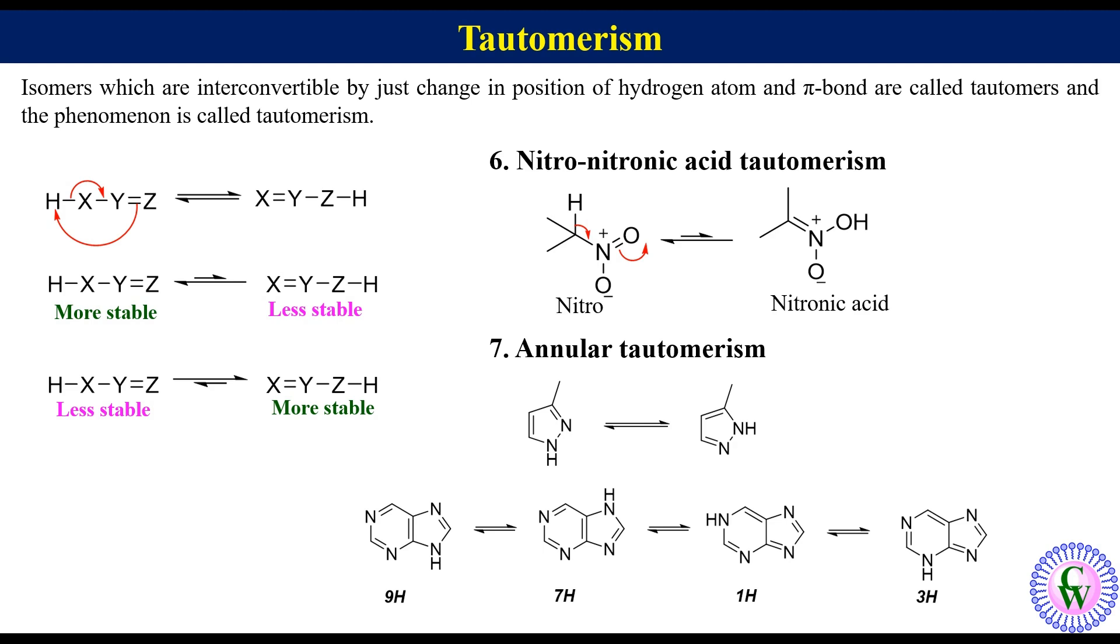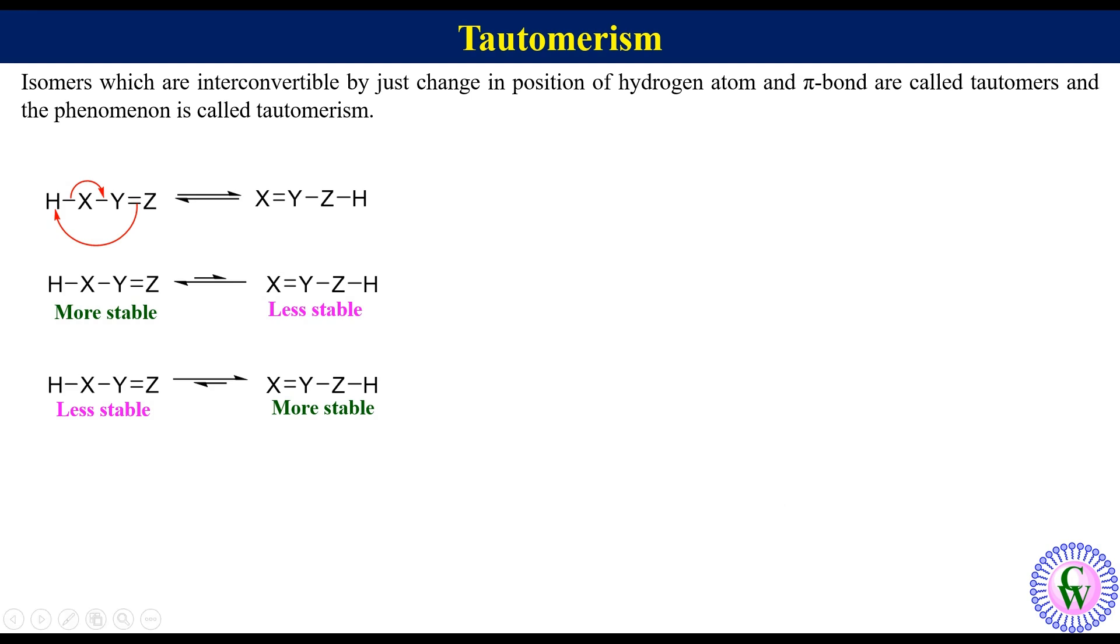Ring-chain tautomerism. In this tautomerism, delocalization of proton is accompanied by conversion of acyclic isomer to cyclic one and vice versa. For example, this is open chain form of D-glucose which is less than 0.2% in solution.